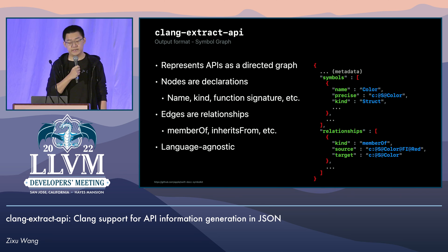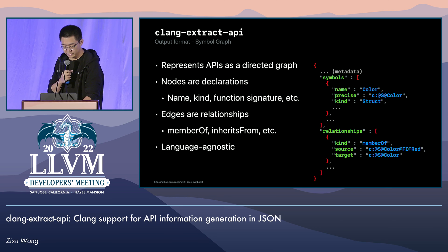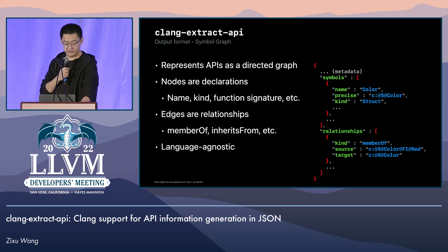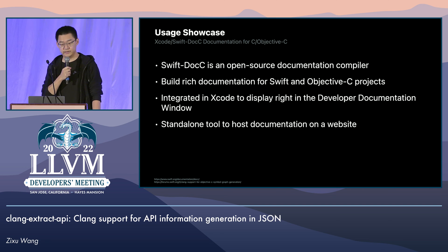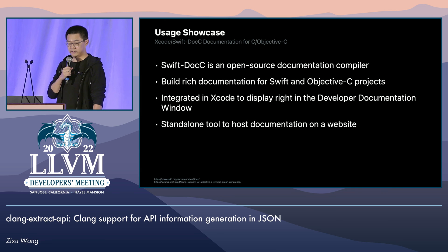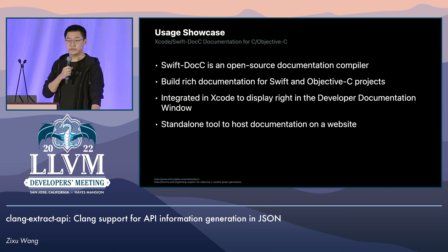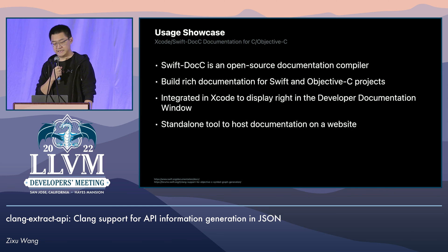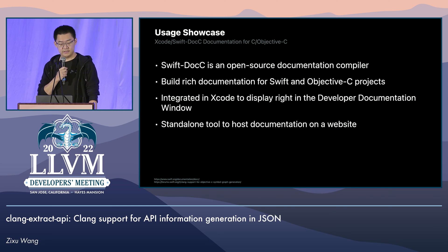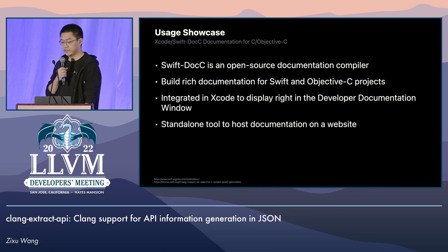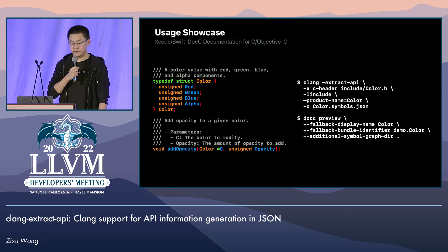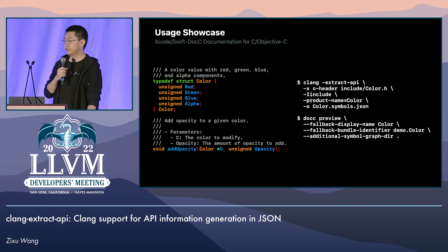The symbol graph format is used by Swift DocC Symbol Kit, which brings me to the showcase of how clang-extract-API is used with DocC. Swift DocC is an open source documentation compiler that automates rich documentation generation. It currently supports Swift and Objective-C projects. It is integrated within Xcode. It's also a standalone tool that can be used to build documentation from symbol graph files and host it on a website, for example on GitHub Pages. And clang-extract-API is used to provide API information for C and Objective-C projects for documentation generation with DocC.